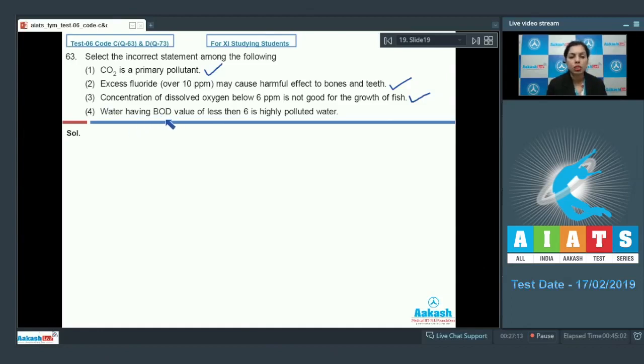Let's check the last one: water having BOD (biochemical oxygen demand) value of less than 6 is highly polluted water. Simply, if we talk about highly polluted water, for this, biochemical oxygen demand should be 17 parts per million at least - more than this water would be considered as highly polluted. And that's why this statement is incorrect because in the statement it's given 6 ppm, and on that basis the answer is option 4.